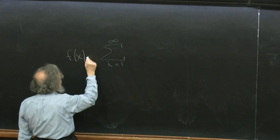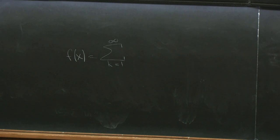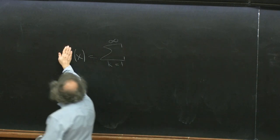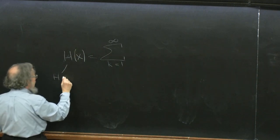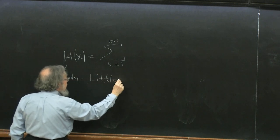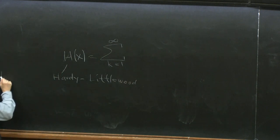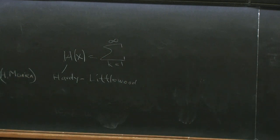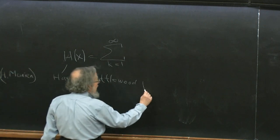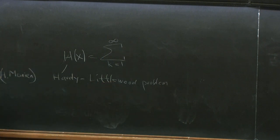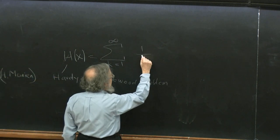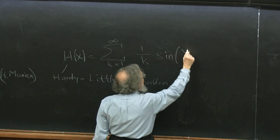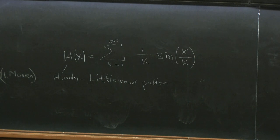Today I'm interested in a very slowly convergent sum. I'll call it H of x, because H stands for Hardy and Littlewood — this time not Hardy and Ramanujan. I don't know the reference where they mentioned this problem, but it was told to me by my friend Hartmut Monin. We worked a little bit on this and on a related problem. He told me about it as an example of a function that's very easy to define, easy to see that the sum converges, but very hard to compute numerically.